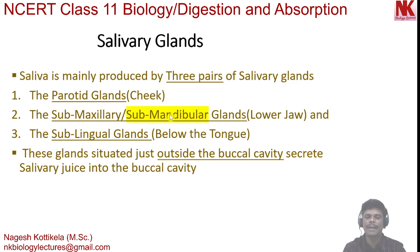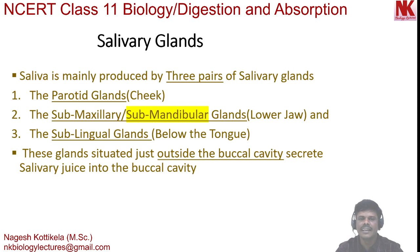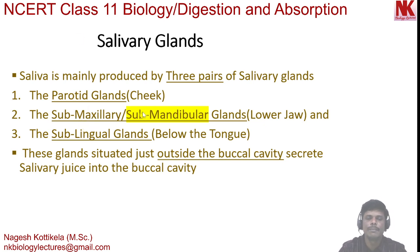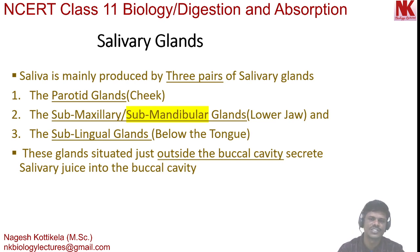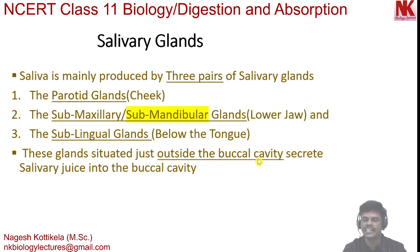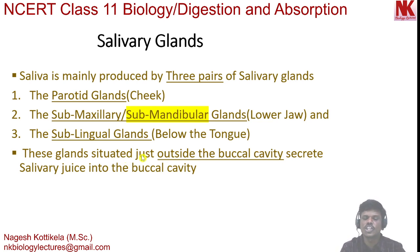The reason for two names — sub-maxillary and sub-mandibular: maxilla is the upper fixed bone of the jaw, mandible is the lower movable bone of the jaw, and mandible is the only movable bone in the skull. Among the three pairs of salivary glands, the sub-mandibular glands secrete the largest volume of saliva. These salivary glands are situated just outside the buccal cavity and secrete saliva into the buccal cavity — an important statement for your exams.